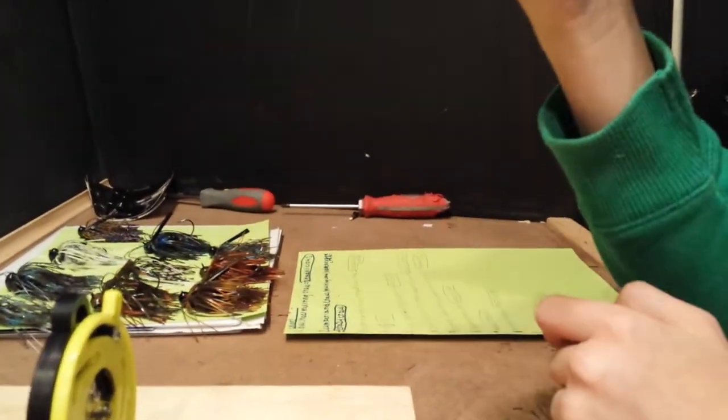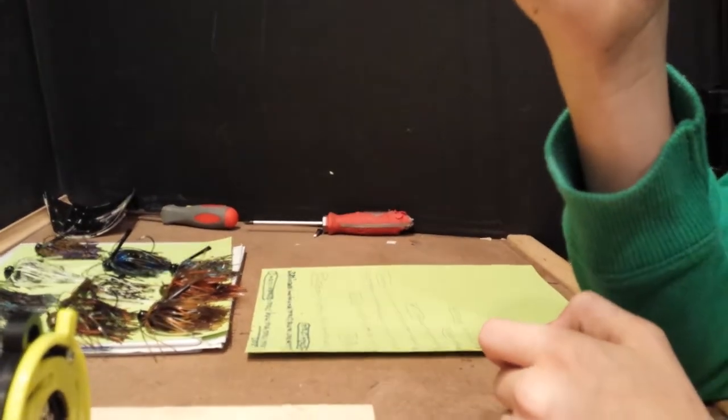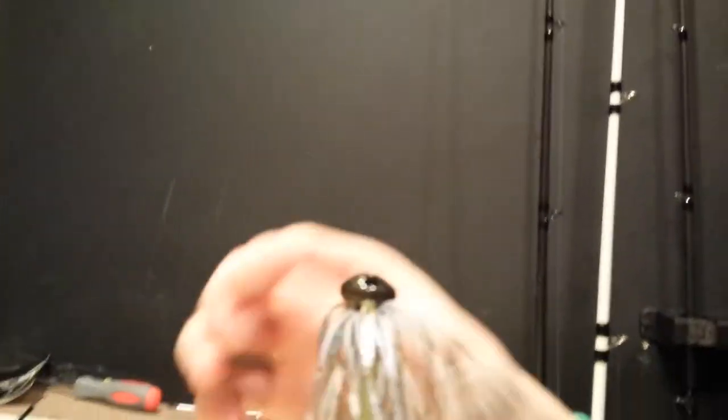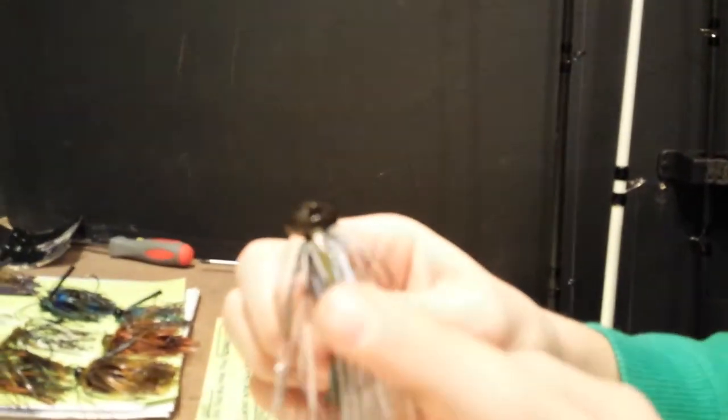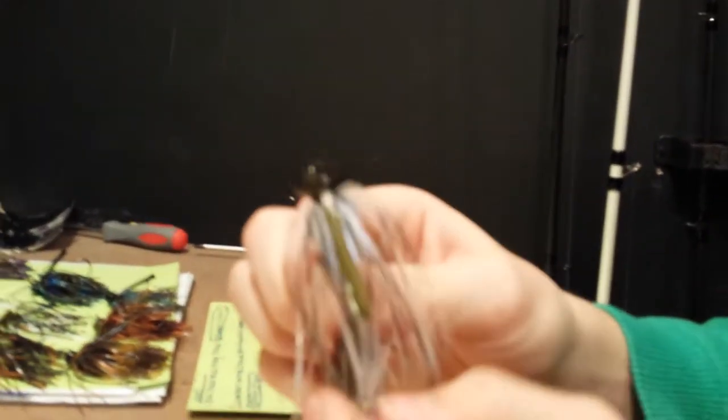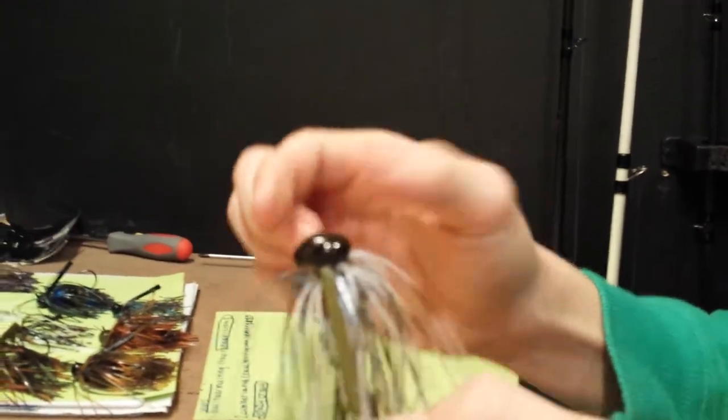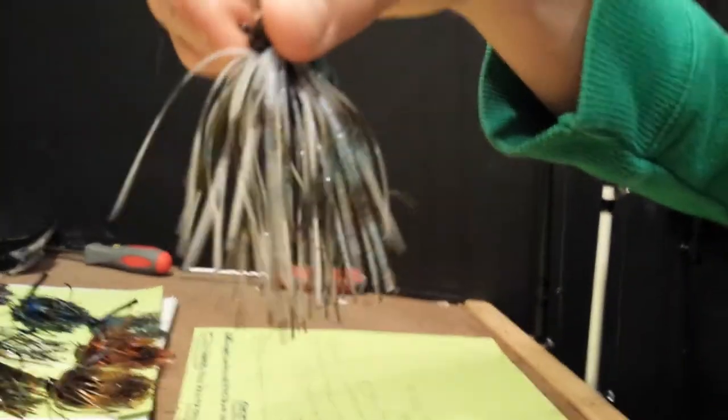So I mounted this here and I've got my jigs ready now. I'm going to show you guys a quick overview of the jigs I have and what their names are. The first one I have here is called Shadalicious. It is a 3.8 ounce head with a green pumpkin black jig. See there? It's a really cool looking shad color.